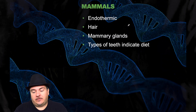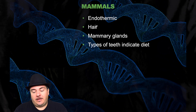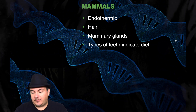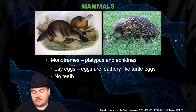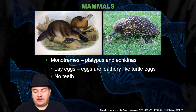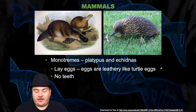Next we have mammals. Mammals are endothermic — they generate their own body heat. They have hair, mammary glands so they produce milk, and they have types of teeth which indicate what type of diet they have. Among the mammals we have the monotremes, which are the platypus and the echidnas. These are mammals that lay eggs, and they have leathery turtle-type eggs. They have no teeth.